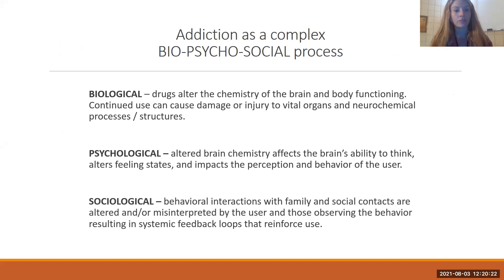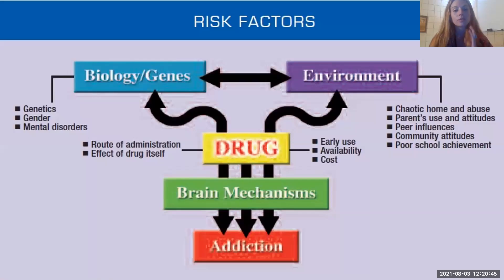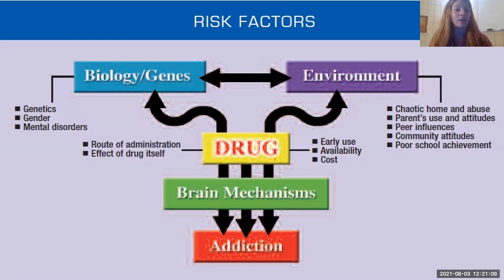Thinking about a treatment plan for patients struggling with opiate use disorder includes aspects of both: what do they need for the biological component of the addiction? What do they need for the psychological component? And how are we helping support them in terms of the feedback loops developed in their social and environmental family settings? As addiction is developing, it's a combination of individual variables — their biology, their genes, the environment, the drug they're using, how often, the route of administration, how available it is — all of those things shift how their brain is functioning and the behaviors they're engaged in. Addiction isn't as simple as remove the drug or remove the person from their environment; we have to attend to all of these factors.